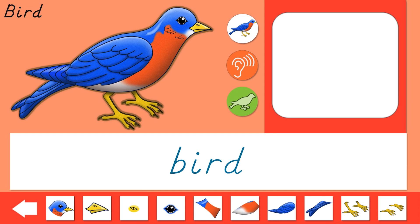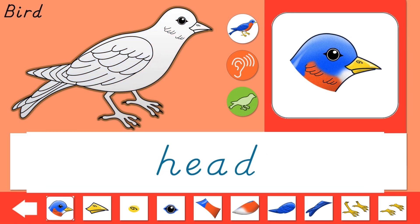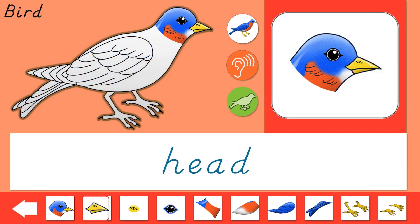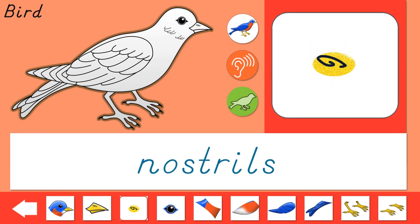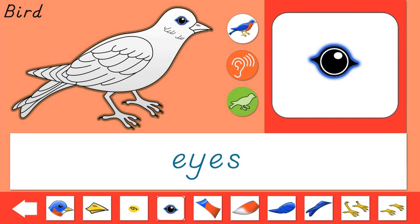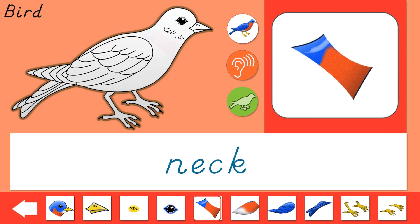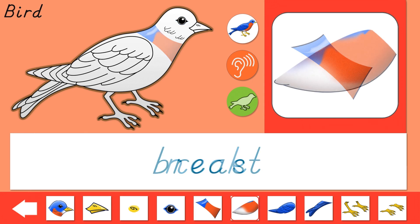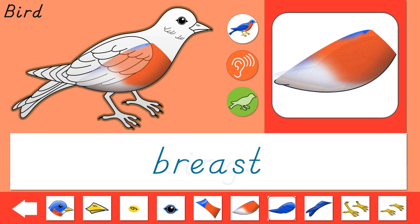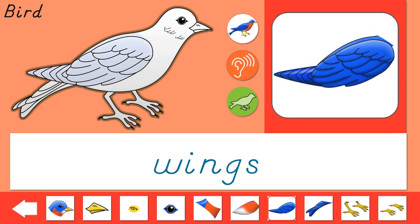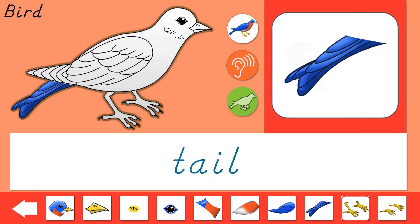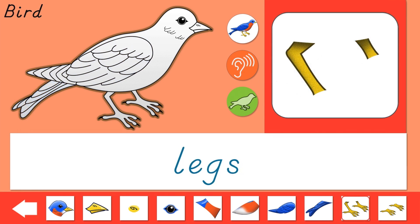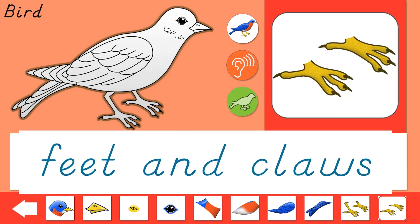Let's learn the parts of a bird. Head, beak, nostrils, eyes, neck, breast, wings, tail, legs, feet, and claws.